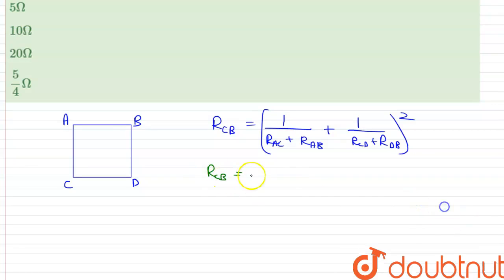Substituting the values, we can write that R_CB will be equal to 1 upon 5 plus 5, plus 1 upon 5 plus 5, and this will be equal to 1 by 10 plus 1 by 10.